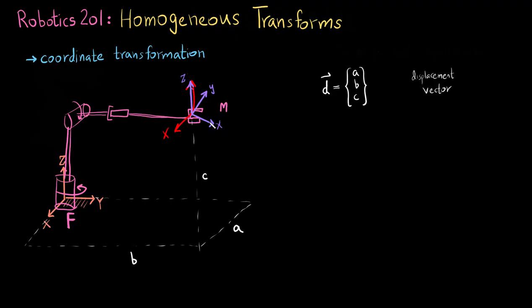So you see that there are two things I need: one is a displacement vector, and the other is a rotation, which we normally represent by the letter A, called a rotation matrix. So there is a rotation matrix and there is a displacement vector.